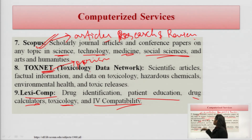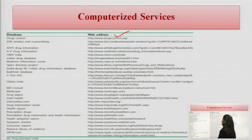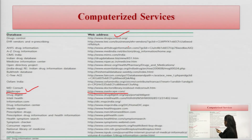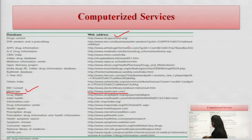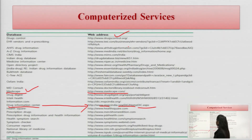We have covered the examples of computerized services as drug information sources. There are databases and web addresses for each — for example, Medscape at www.medscape.com, and the drug information center in India at www.mspci.org. Different databases have different web addresses which can be followed for drug information.